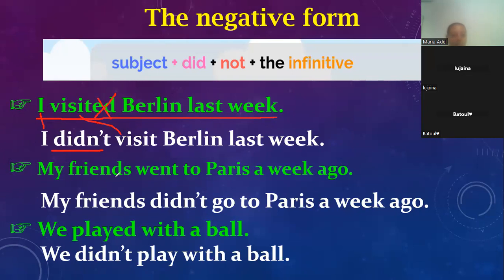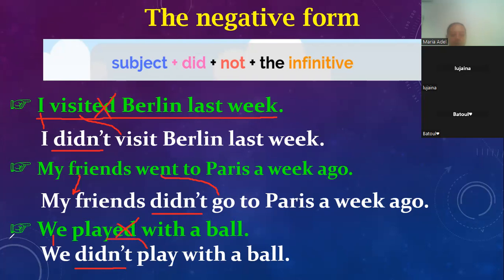The next example: 'My friend went to Paris a week ago.' If we want to make it negative: my friend + didn't, then the verb returns to the infinitive form — go. 'My friend didn't go to Paris a week ago.' Next: 'We played with a ball.' When we make it negative: didn't + play — we take away the ED and return the verb to the infinitive. 'We didn't play with a ball.'